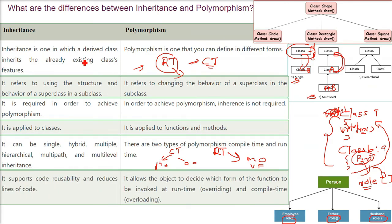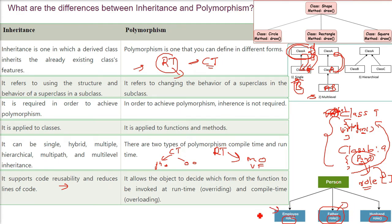Inheritance supports code reusability and reduces lines of code, because you are inheriting the code and don't have to write it again. When class A is inside class B, and in multi-level class A and B are inside class C, you are reusing that code. Polymorphism allows the object to decide which form of the function to invoke — at runtime via overriding, or at compile time via operator overloading or function overloading, depending on whether you are using a virtual function for the base or derived class.